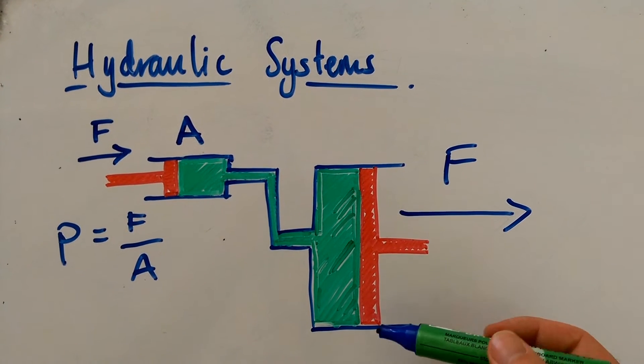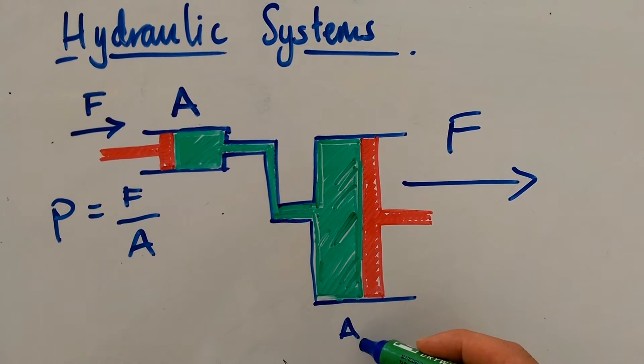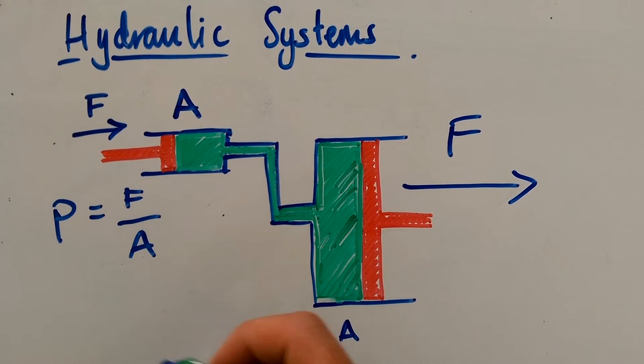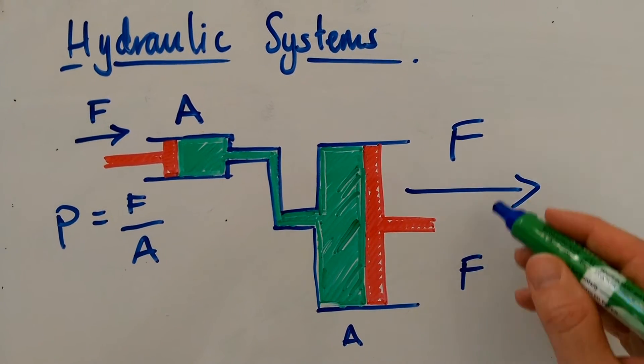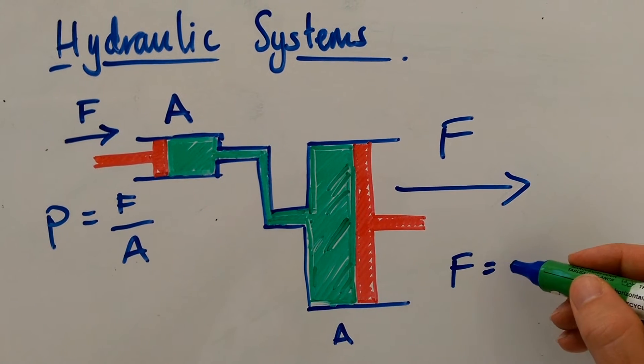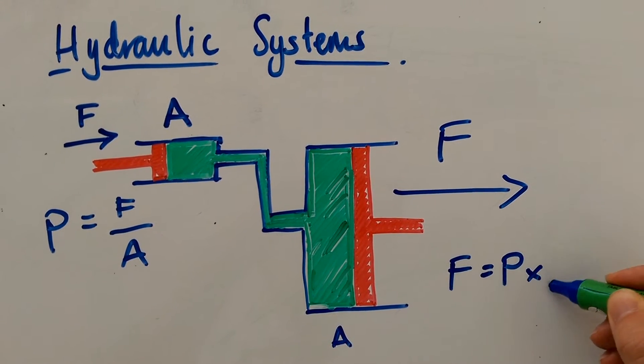So if we know the area of this piston, we can then rearrange this formula to work out what the force out here is. So a force becomes pressure times an area.